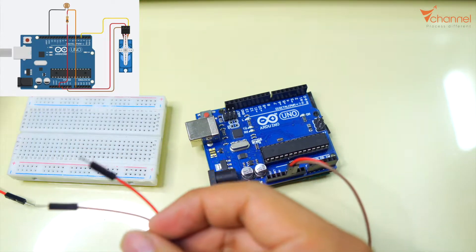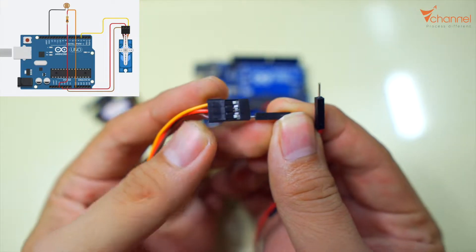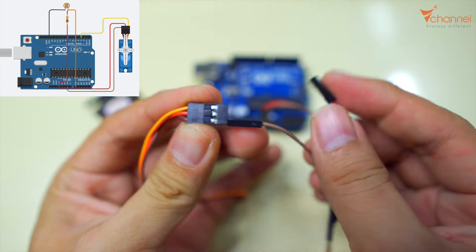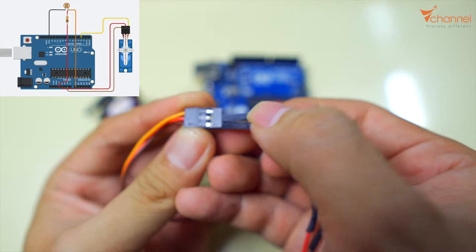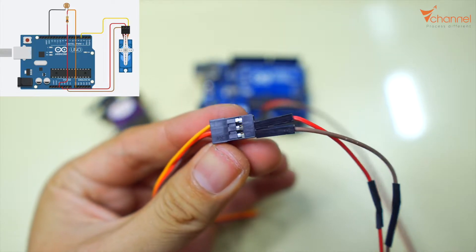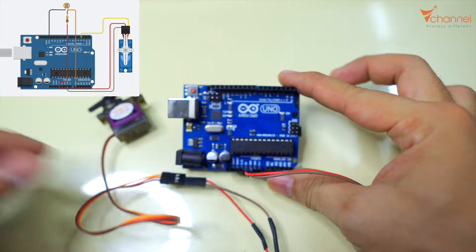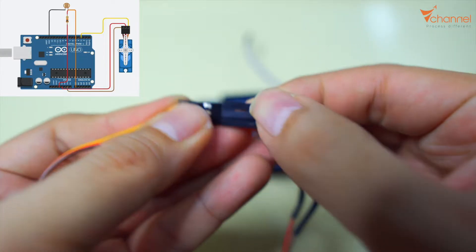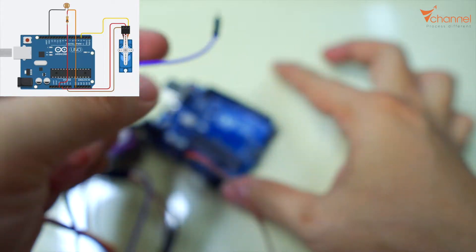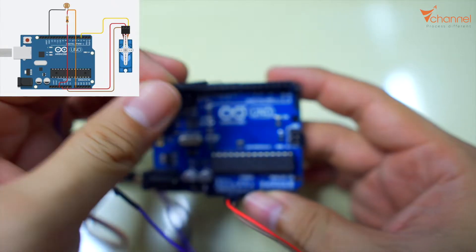We connect servo. Next is the signal wire. We connect to number 3 port of Arduino.